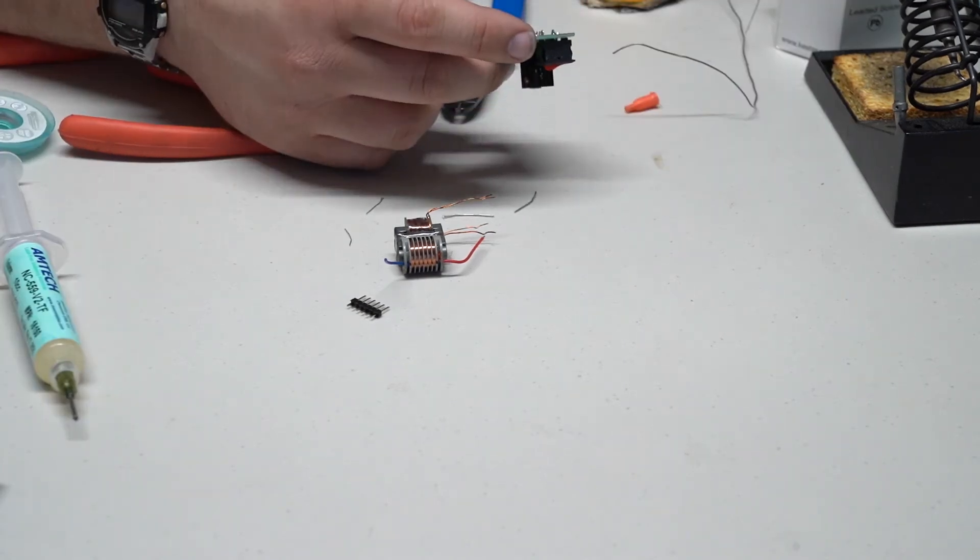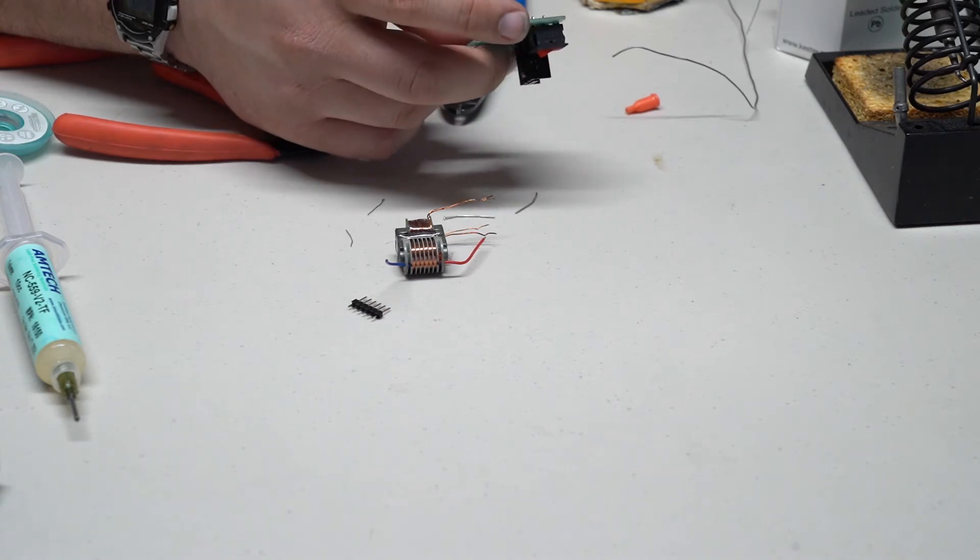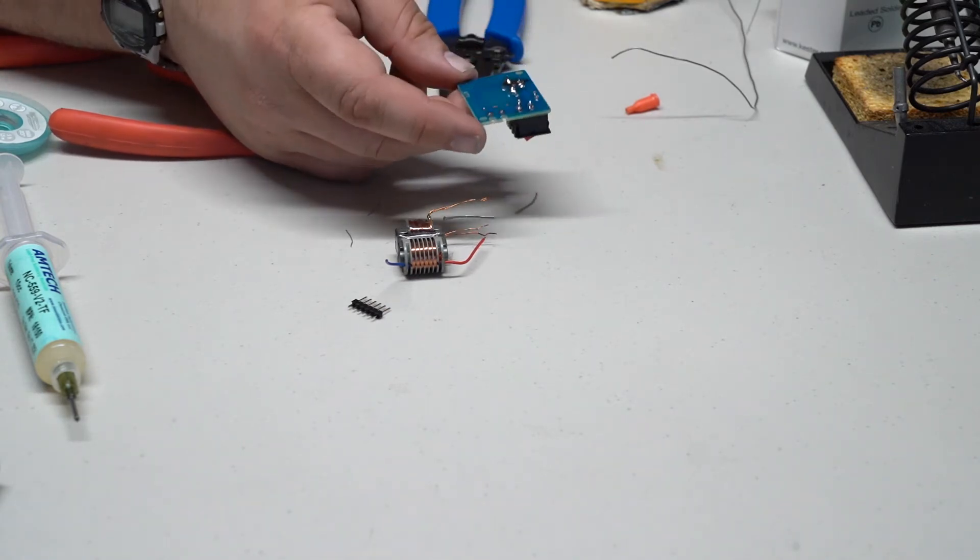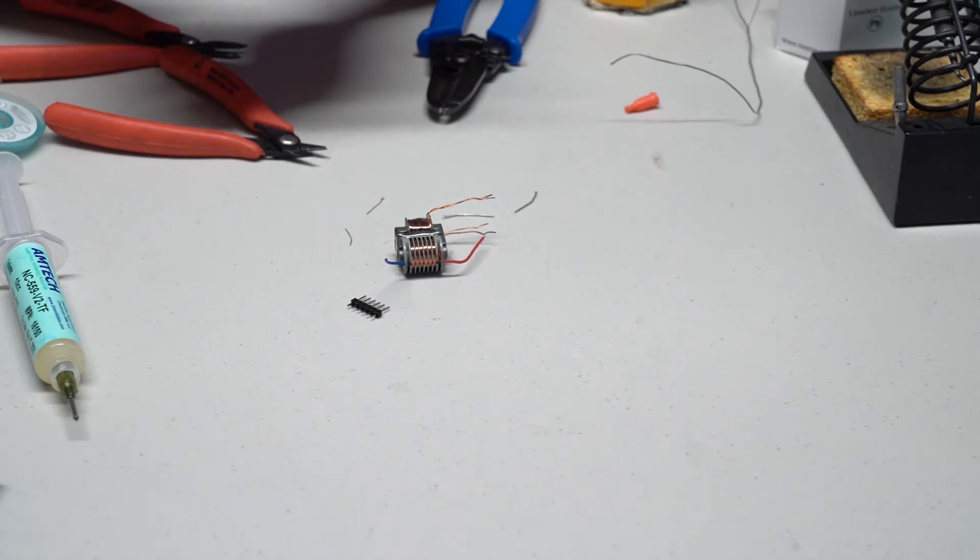I'm still not sure how the transformer is supposed to be mounted here. I think both the red and the blue leads are supposed to be floating in free space. That's going to be where the arc is produced. The middle pin connects to the positive input power. You cannot have that disconnected for this to work. So that has to go somewhere.